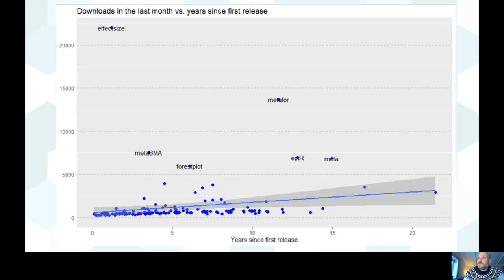'Meta-bma' looks at Bayesian model averaging for meta-analysis. Really, some of what I'm going to be saying in this talk is about what is it that you think leads to a package being highly downloaded, almost regardless of age.